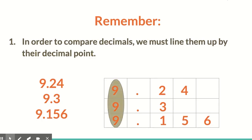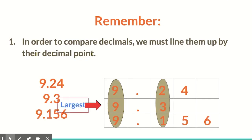Next, from here, we're going to start from the left side. This doesn't really help us because every single number is exactly the same, so we keep moving. If we look at our tenths place — the first place to the right of the decimal — we notice that we have a 2, a 3, and a 1. The 3 is the largest of these, so that tells us that 9 and 3 tenths is actually the largest value. A common mistake is to choose 9 and 156 thousandths because people think 156 is larger than 3 or 24. But those spaces could be filled with zeros — that's actually 240 thousandths, 300 thousandths, and 156 thousandths. If it helps to fill in those zeros, you can do that — definitely helpful.